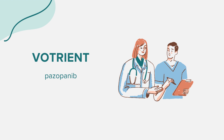Additionally, Votrient can reduce blood cells that aid in fighting infections and clotting. This can increase the risk of infections or bleeding. If you notice unusual bruising, bleeding, or signs of infection like fever, chills, or body aches, contact your healthcare provider.